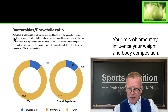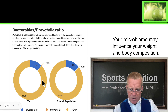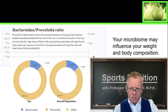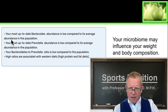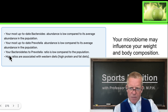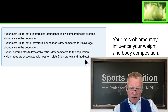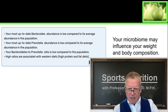Next, they look at the Bacteroides to Prevotella ratio, again comparing me to the general population. You can see that this particular abundance is low compared to the average abundance in the population. What does that mean? High ratios are associated with a Western diet, which is high protein and high fat — we want to avoid that. So again, this suggests that my diet is on the right track for the most part.